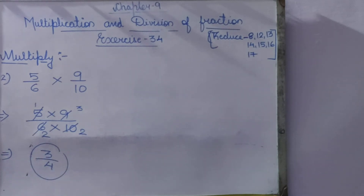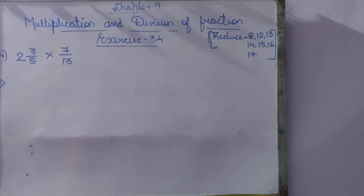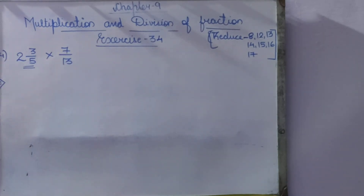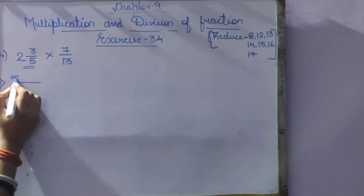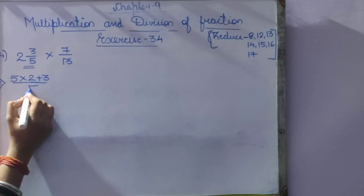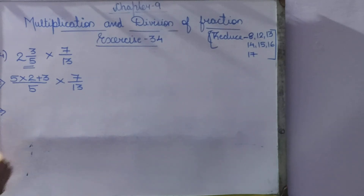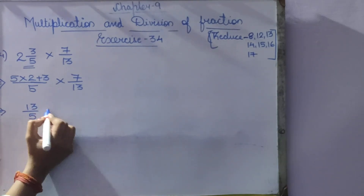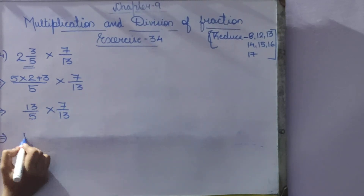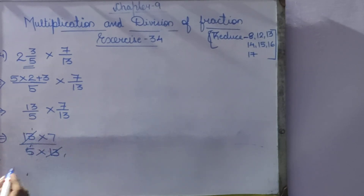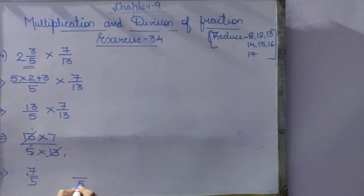Mark question 3 as homework. Question 4: 2⅗ × 7/13. Convert the mixed fraction: 5 × 2 + 3 = 13, giving 13/5 × 7/13. Now 13 × 7 divided by 5 × 13. The two 13s cancel, leaving 7/5. Numerator is greater than denominator, so we divide: 5 ones are 5 plus 2, giving answer 1⅖.